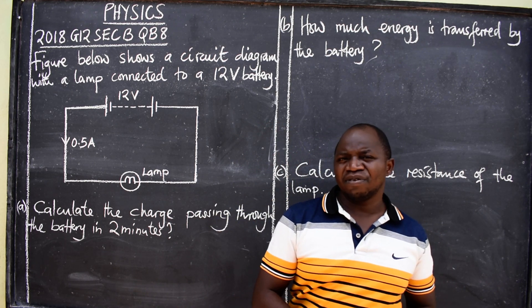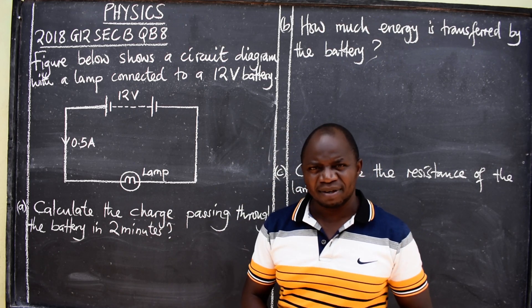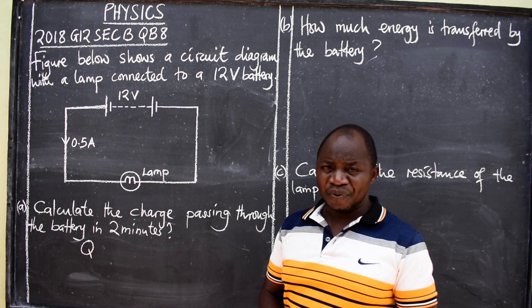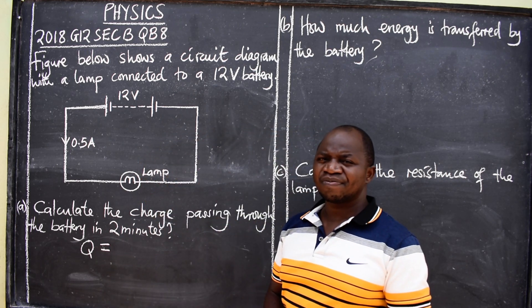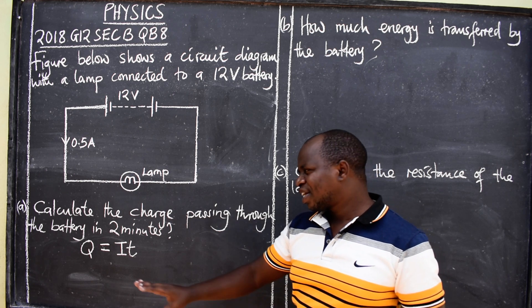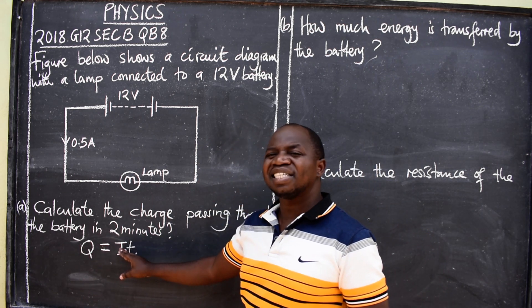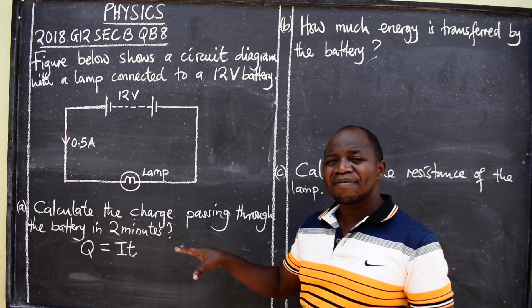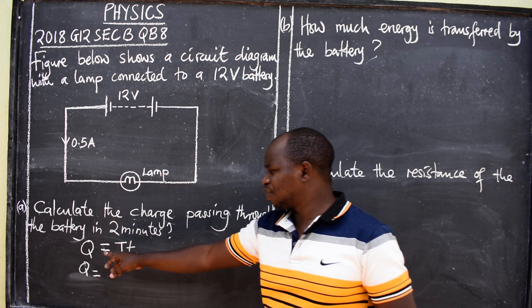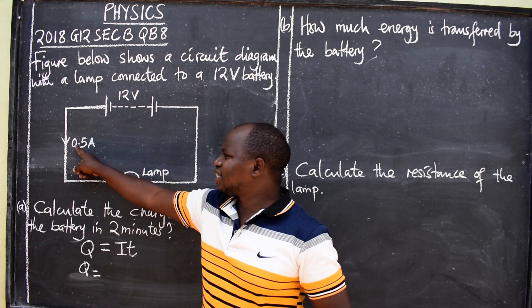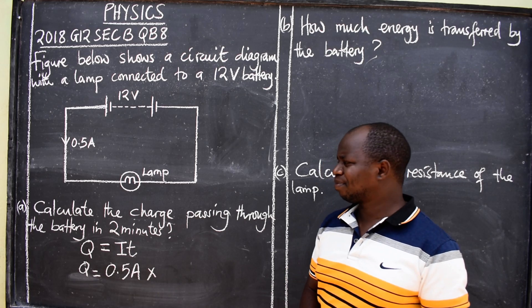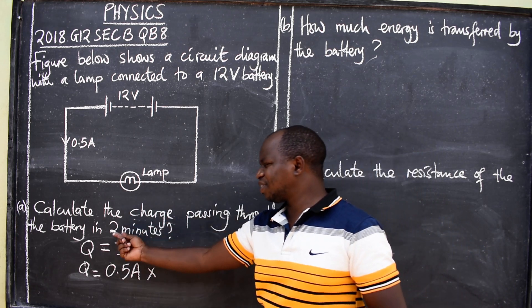We have to understand the meaning of charge. Charge is the amount of electricity that can either be positive or negative. Charge has a formula — charge is represented by Q, which is equal to current multiplied by time. So don't forget: charge is always equal to current times time. When we substitute, current is 0.5 amps, multiplied by time. The question says calculate the charge passing through the battery in two minutes.